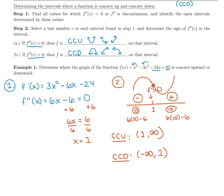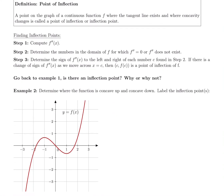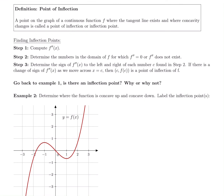Now, what do we call x = 1 since it's not a critical number? A point of inflection on the graph of a continuous function is where the tangent line exists and where concavity changes. To qualify as an inflection point, two things must happen: the second derivative equals zero or is undefined, and concavity must actually change. If concavity is the same on both sides, it is not an inflection point.